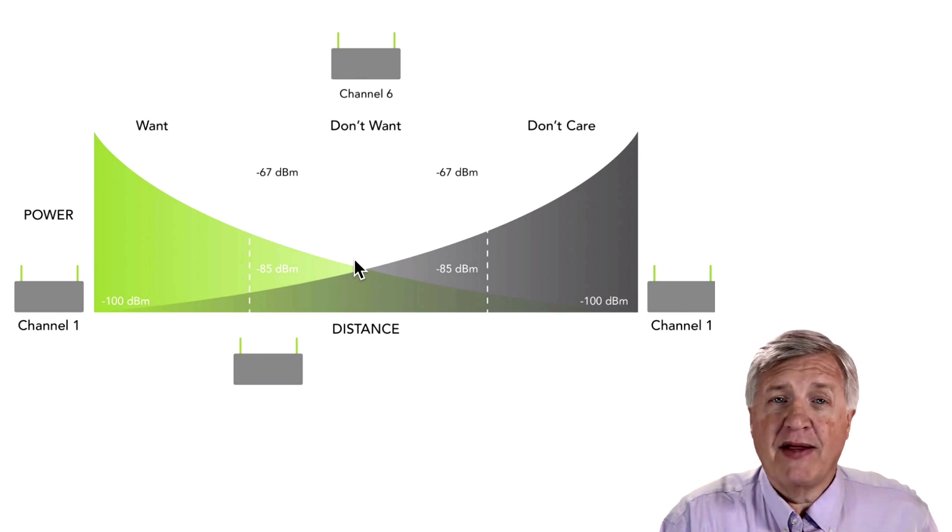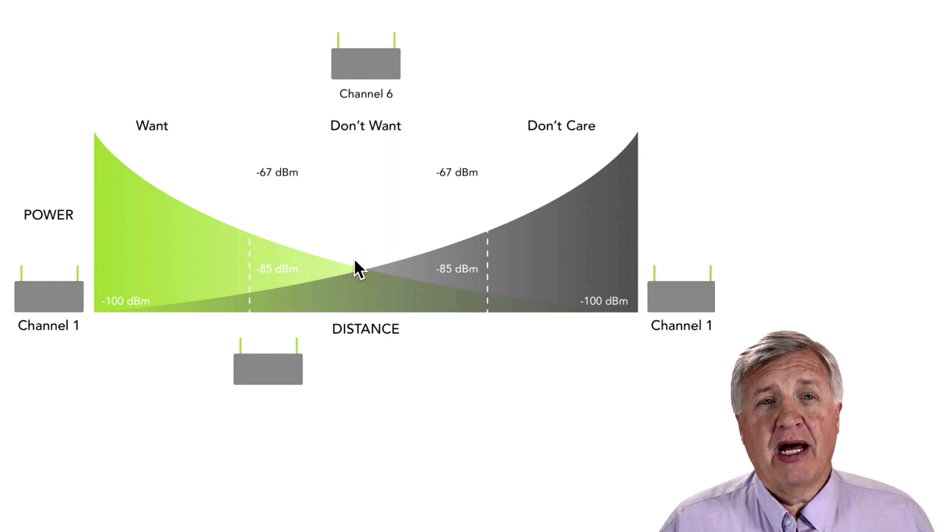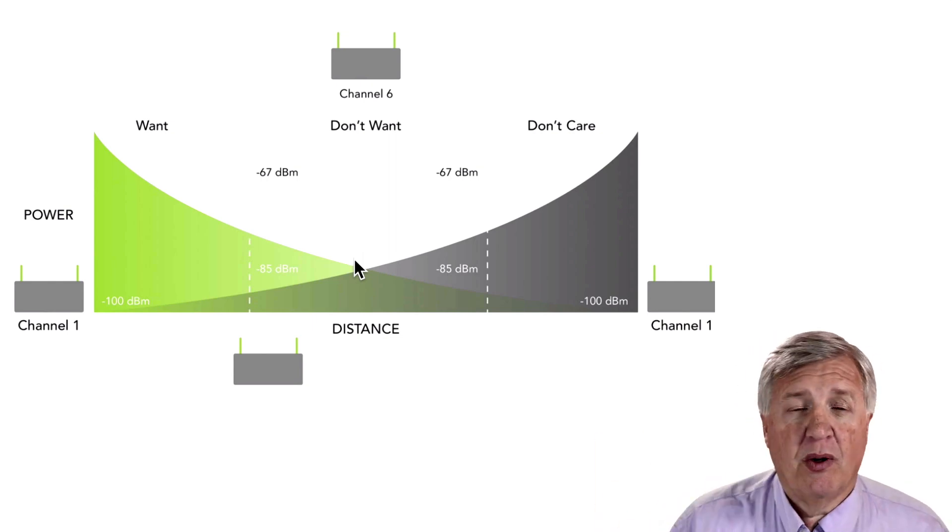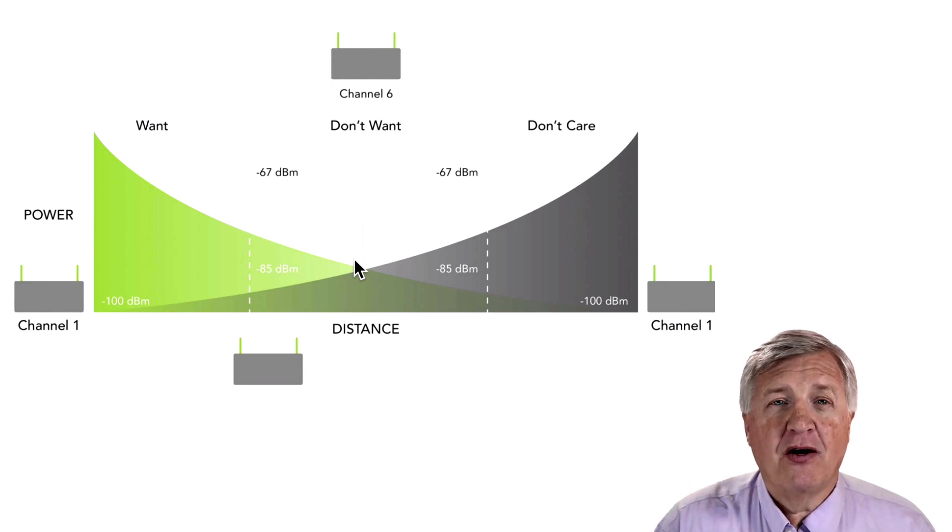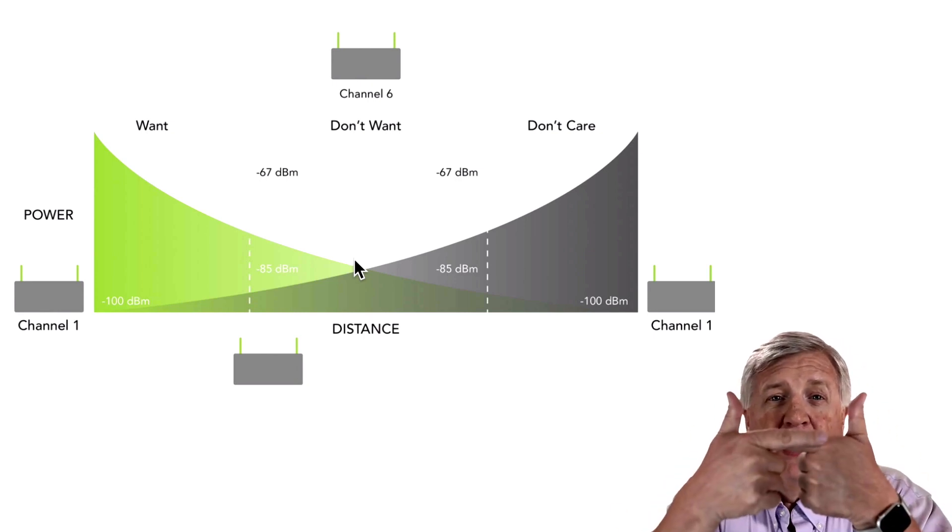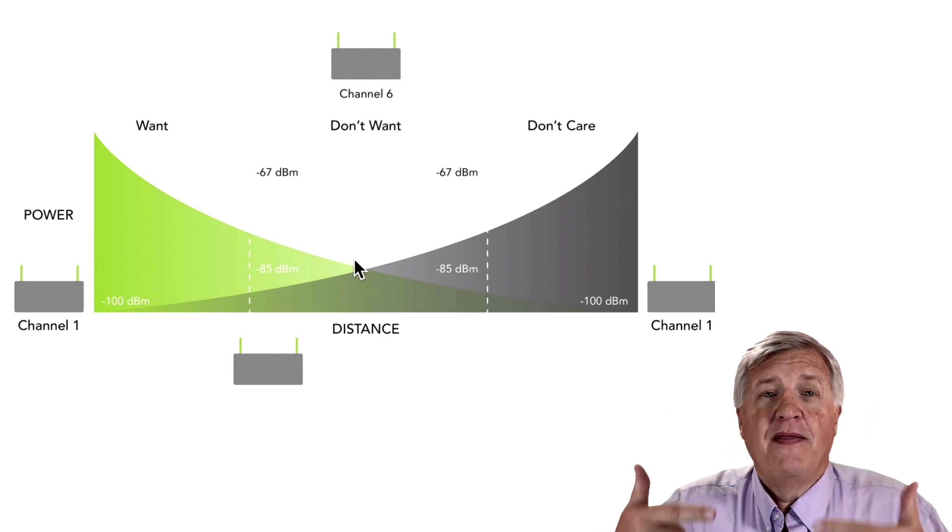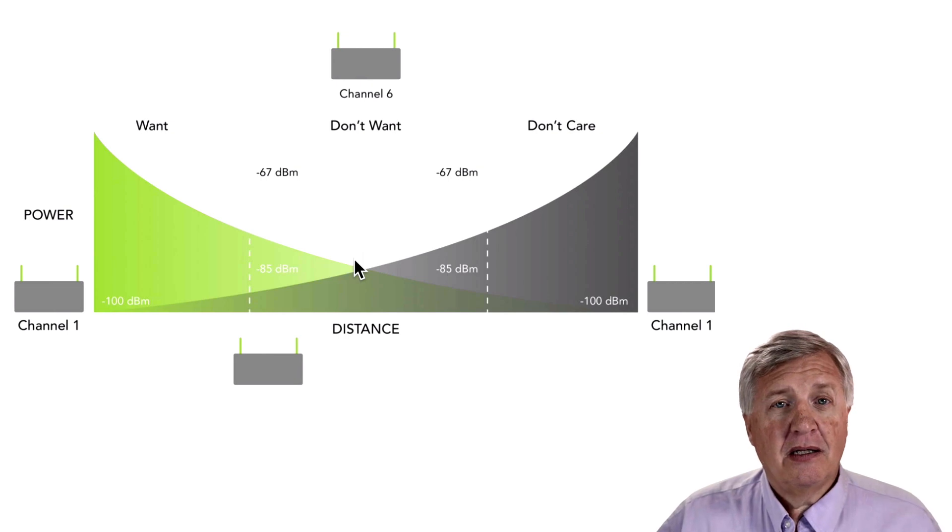Want is what we want. That's what we want to design for. Don't care. We don't care. And if you're using a tool, you can actually set this to show it gray. So it matches what's going on in the picture. Don't want. That's how we make our Wi-Fi go faster. We get rid of the don't want zones because we know only one device can ever transmit at a time. So if I can take these two APs and pull them far enough apart that they're not in the same zone, I can speed up my clients because they don't have to wait that much.